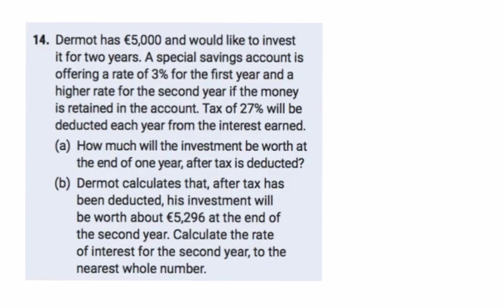Now we have Dermis, who would like to invest €5,000 for two years. There's a rate of three percent for the first year and a higher rate for the second year if the money is retained in the account. There's also a tax of 27% deducted each year. At the end of year one we have €5,000.